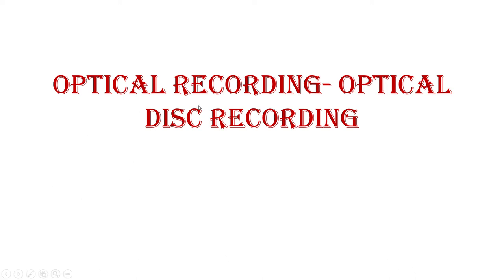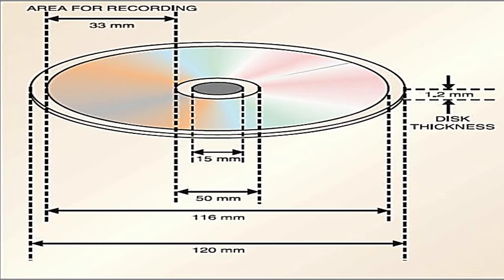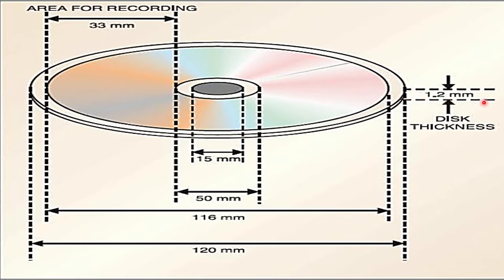In today's session we are going to talk about optical disc recording. In the previous session we talked about optical film recording; today we will focus on the compact disc, that is CD. This diagram shows the structure of the CD. The diameter is 120 millimeters, which is 12 centimeters. The actual data recorded area is 116 millimeters, there is a small hollow portion of 15 millimeters, and the recorded portion spans from 50 to 116 millimeters. The area of recording is 33 millimeters and the thickness of the CD is 1.2 millimeters.